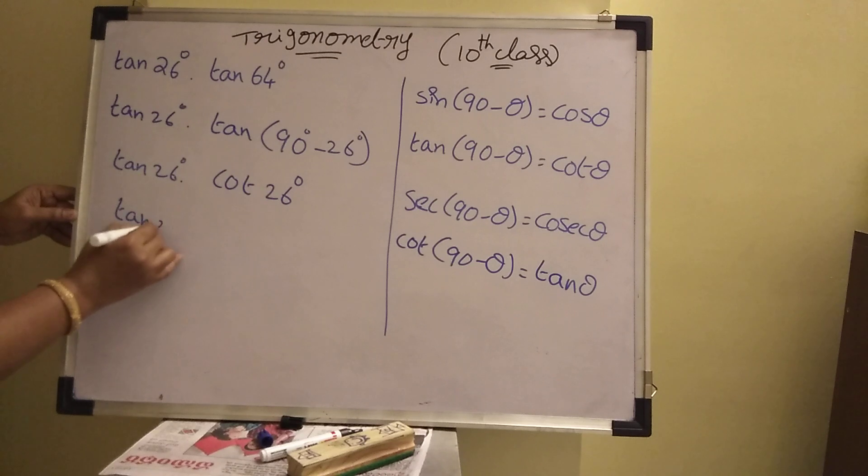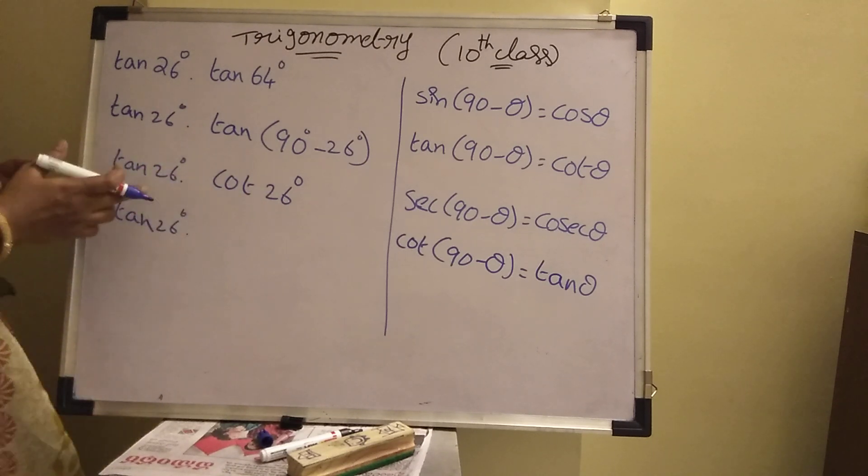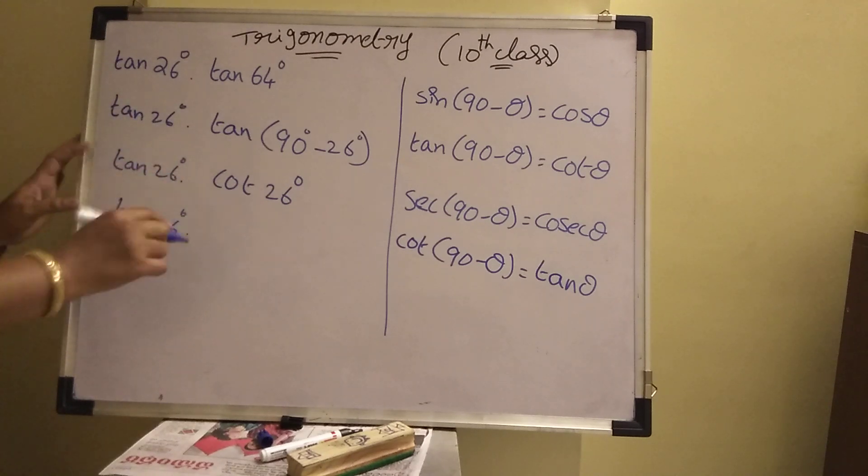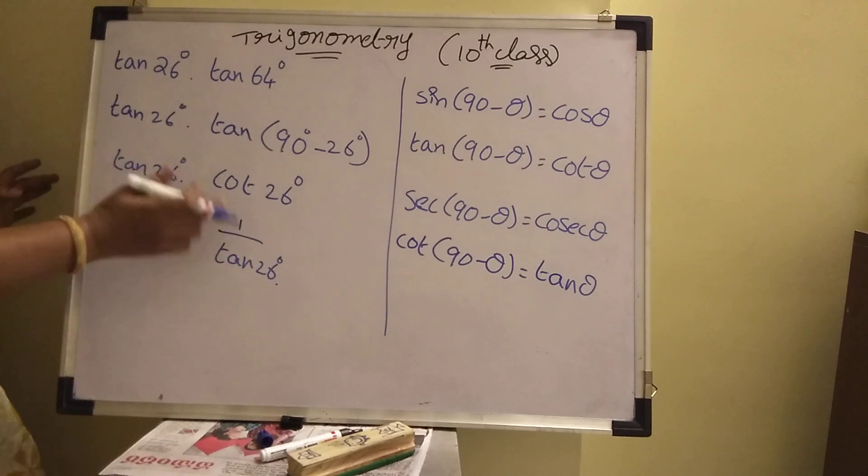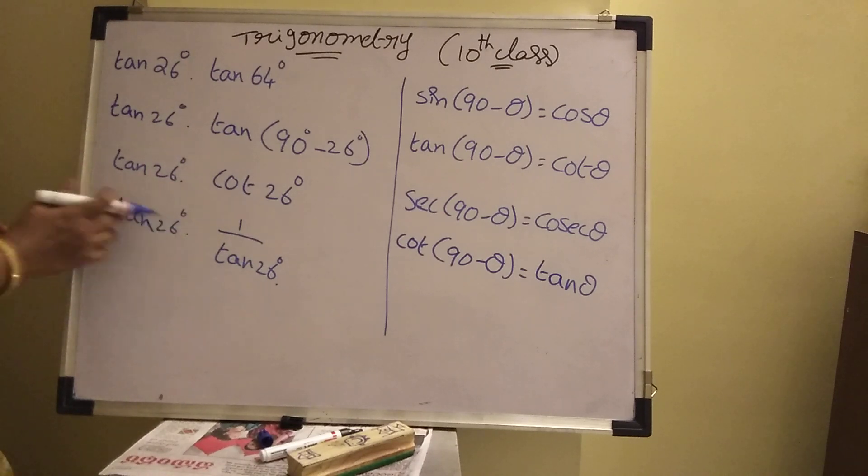Now here, tan 26 degrees into cot is there. What is cot? Cot means tan reciprocal. That's why, in terms of tan. Because here tan is there, that's why it will convert into tan only. That's why 1 by tan 26 degrees. Cot means 1 by tan. Up and down, same function only there. Then cancel one time. It will be 1.